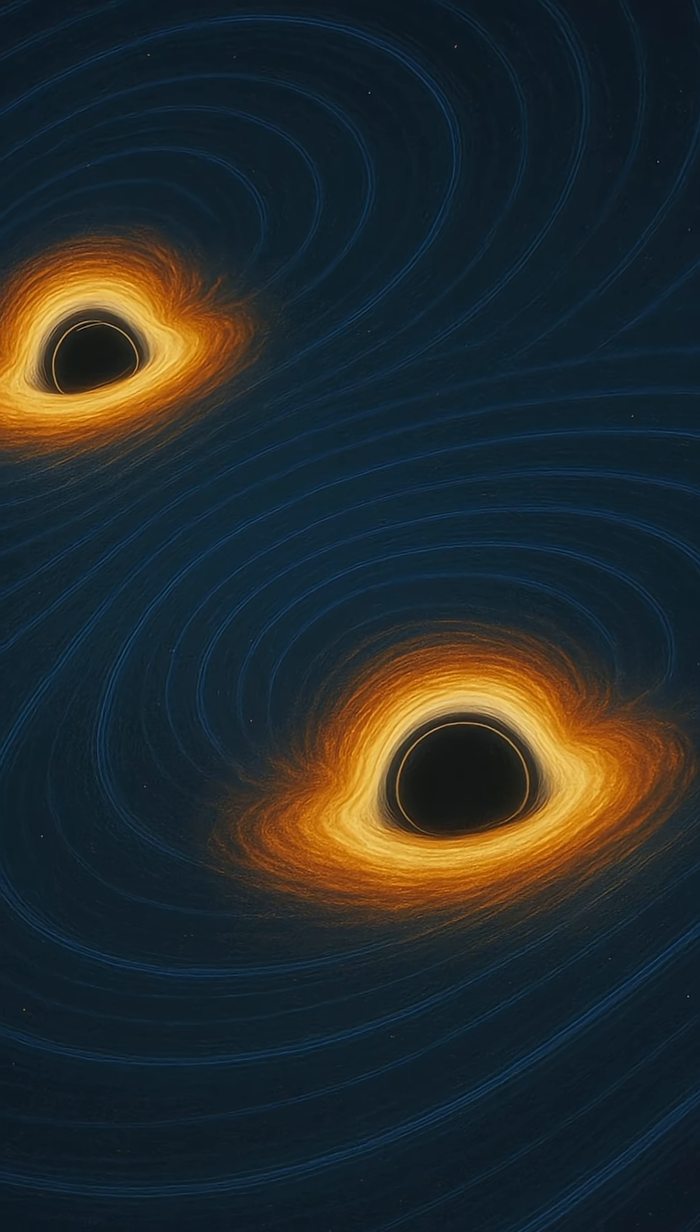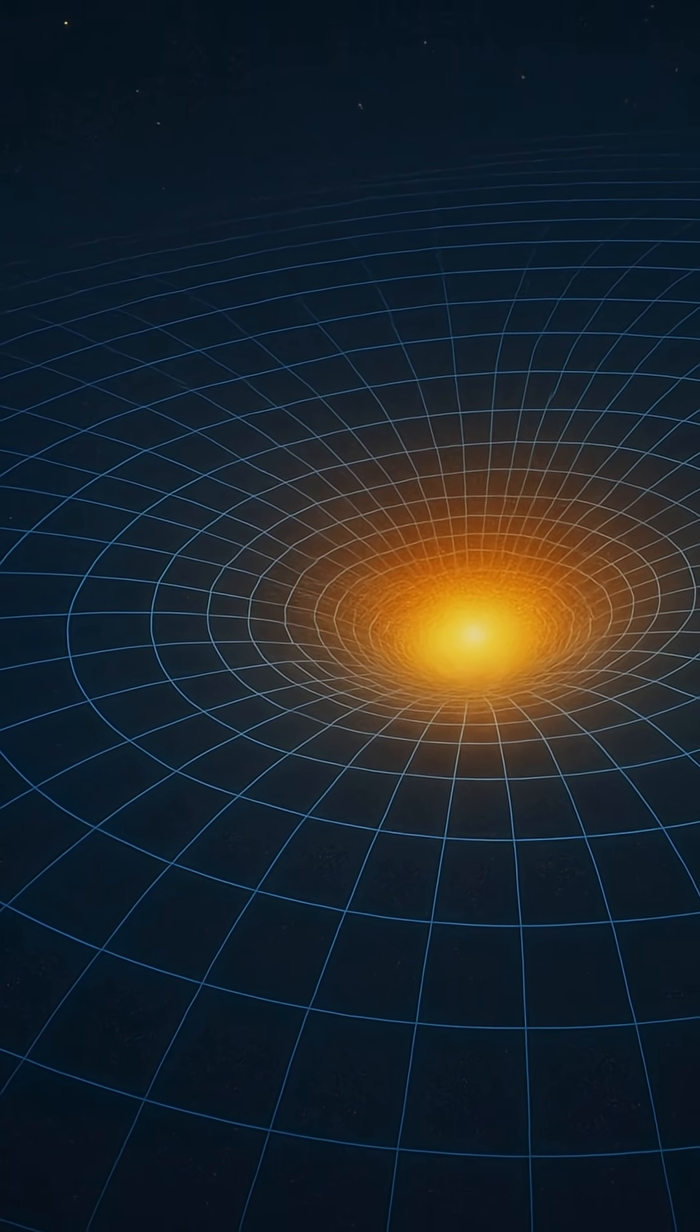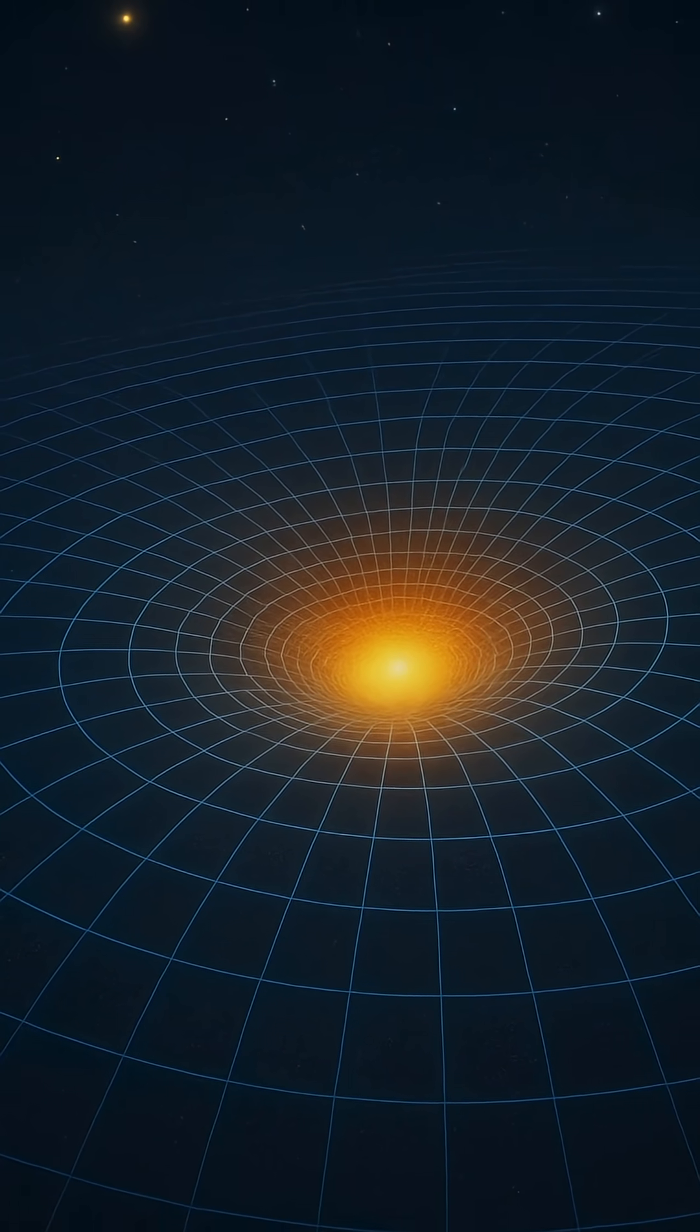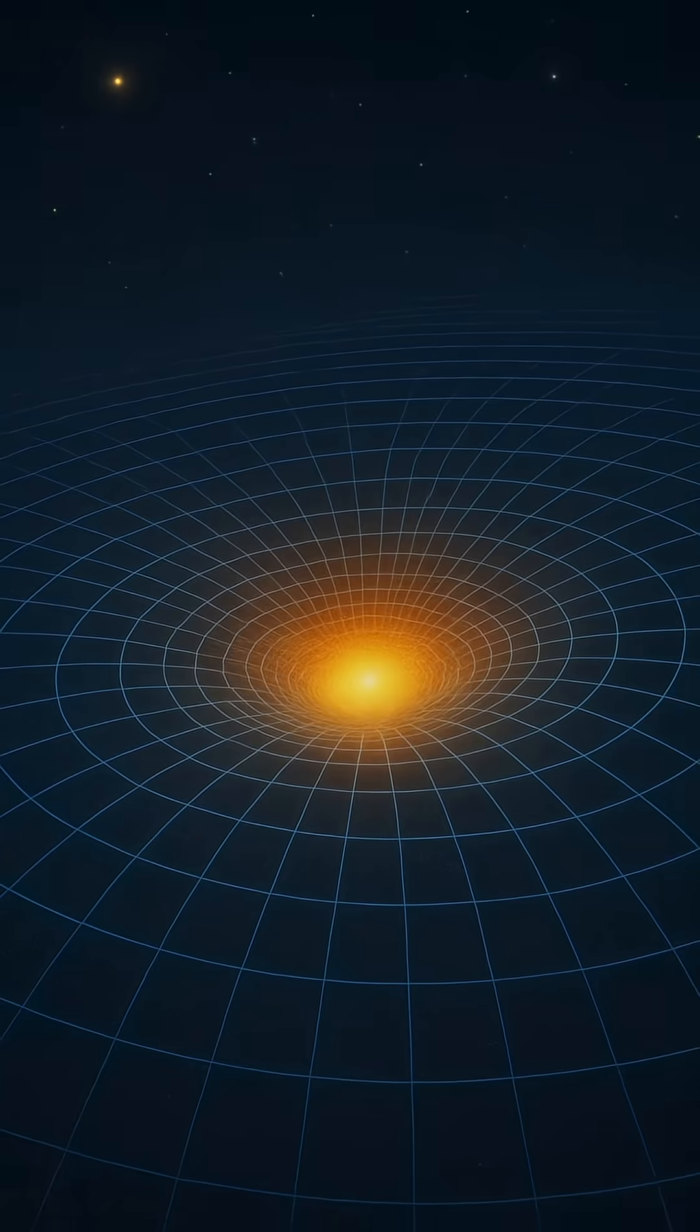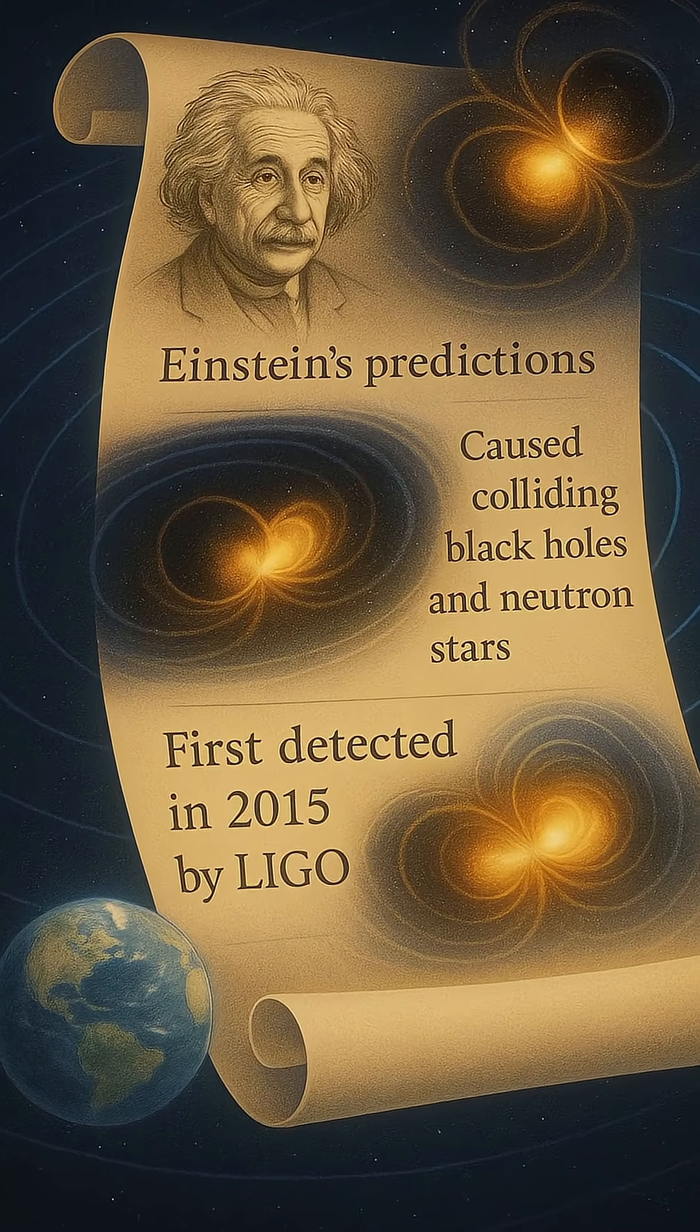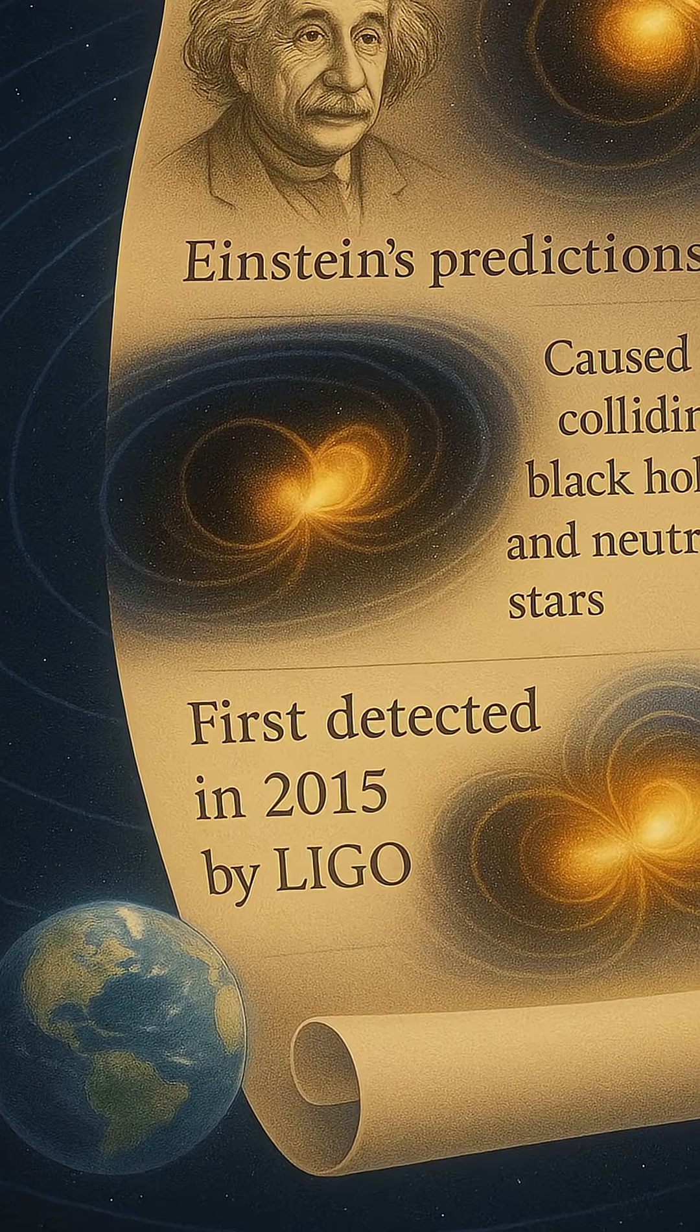These weren't just energetic events. They were confirmations of Einstein's bold prediction from his general theory of relativity. Gravitational waves don't shine and they can't be captured like a photograph, but they carry secrets. When massive celestial objects like black holes or neutron stars spiral into one another, the force of their union sends out energy in the form of these ripples.